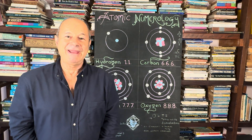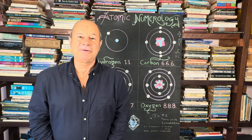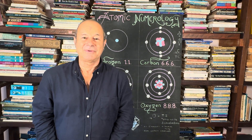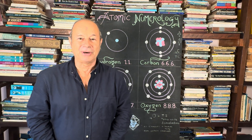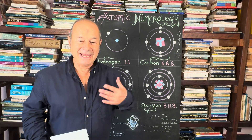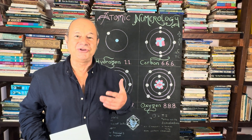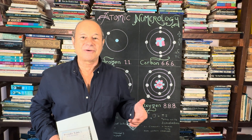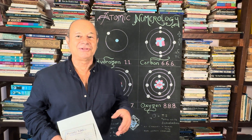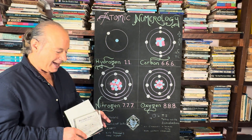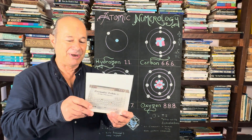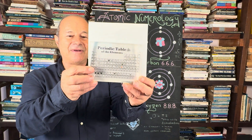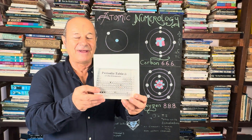Did you know that every element of the periodic table is contained within the human body? That even means we actually contain uranium. It's kind of like we're stardust — we contain everything in the universe. Most people already know the periodic table, so this is a feature of every element.